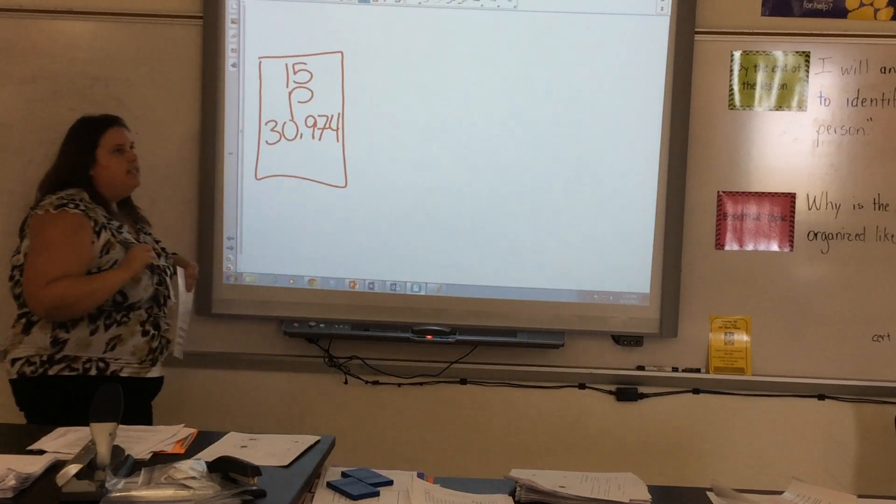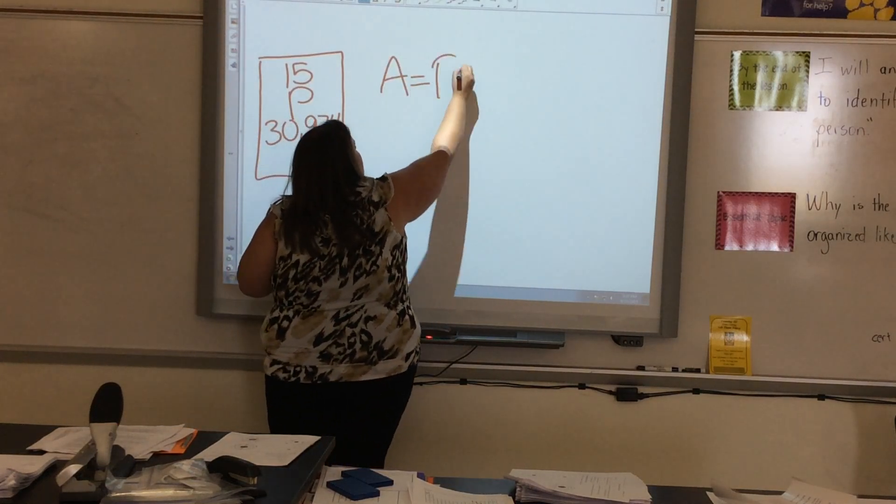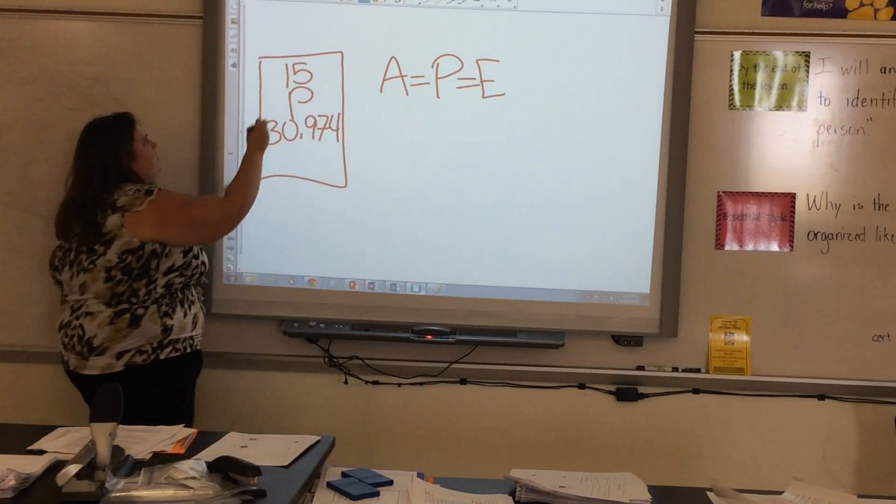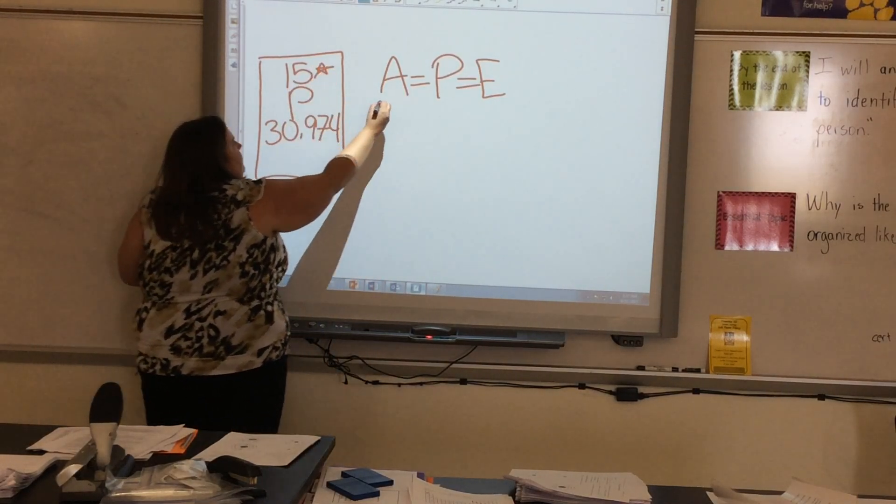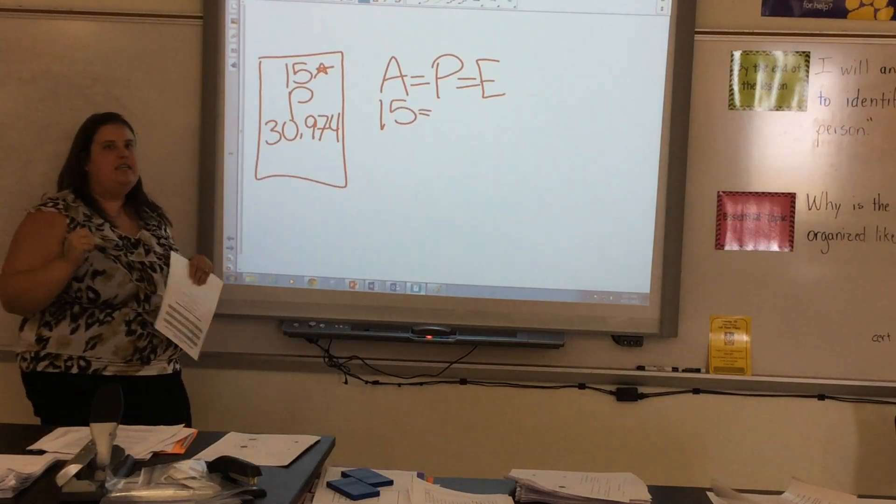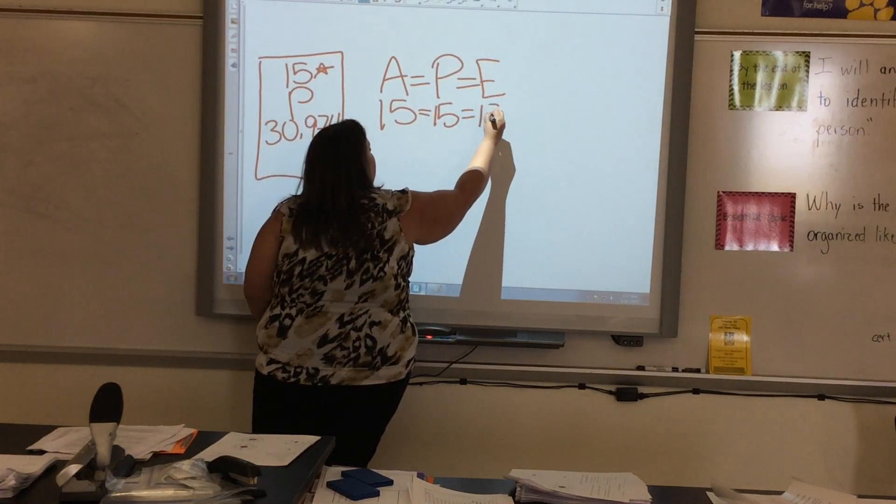So the first thing I do is APE MAN. I've got A is equal to P is equal to E. My atomic number is right here. It is 15. So if my atomic number is 15, I have 15 protons and 15 electrons.